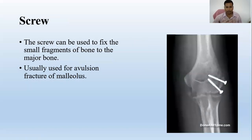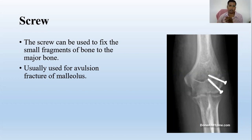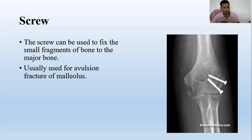These are screws. The metal is always the same. Screws are used to fix a small fragment of bone to the major bone. When a small fragment is detached from a large bone, these screws are used to fix that fragment back. This typically occurs in avulsion fractures, where a very strong muscle is attached to a bony part and a sudden force causes detachment of that small fragment from the major bone. Screws are also very useful in malleolus fractures.